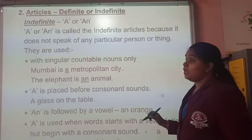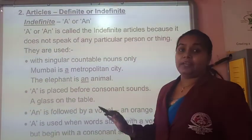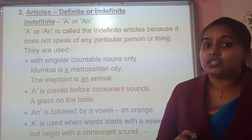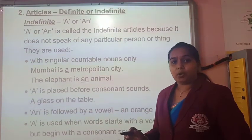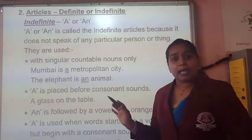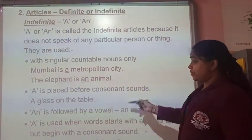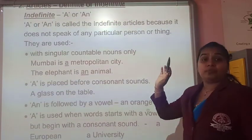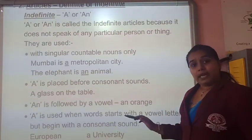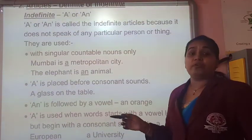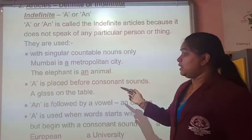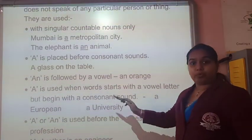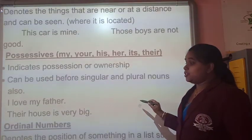Let us read further. We started with articles — definite or indefinite. The indefinite articles are A and AN. Why are they indefinite? Because they are pointing in general; they are not particularizing the noun that we are talking about. Let us read where we use A and AN. As we have already revised in our previous video, I will be sending you this document so you can read and revise. They do not speak about a particular person or thing — that is why they are indefinite. A is used before words starting with a consonant sound. You have to remember that we pay attention to the sound.